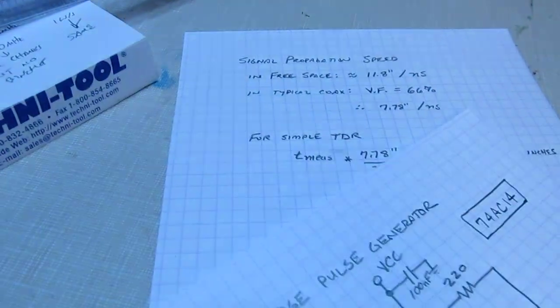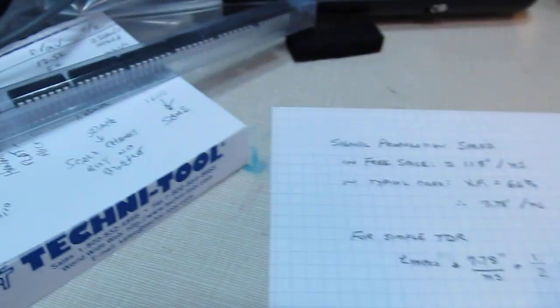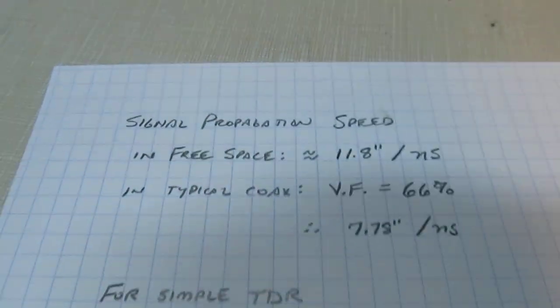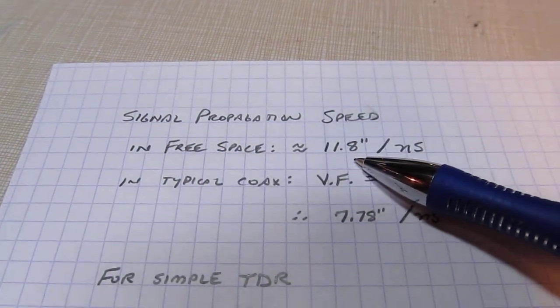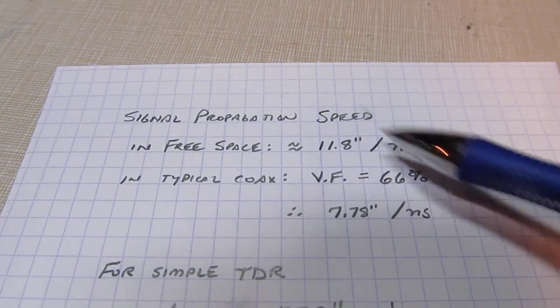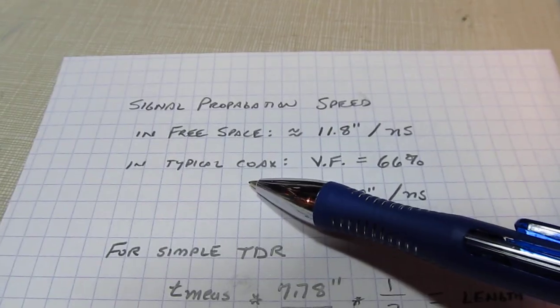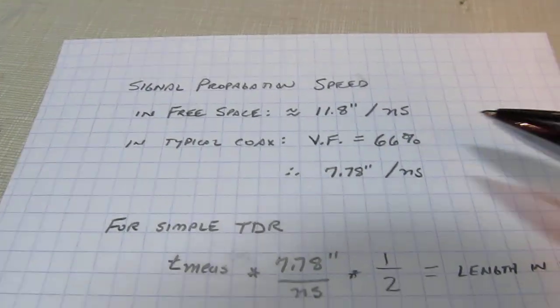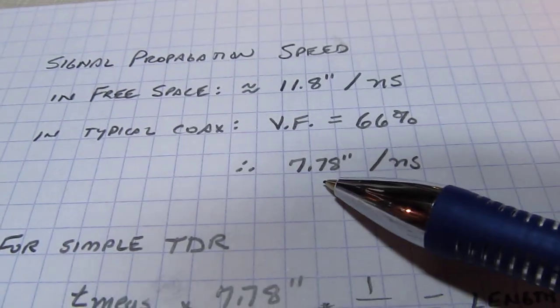This is the detail from my previous video, so a quick review. Signal propagation is about eleven point eight inches per nanosecond in free space. In typical coax, the velocity factor is sixty six percent, so we're going to be about seven point seven eight inches per nanosecond.